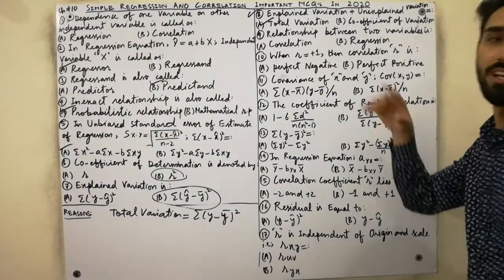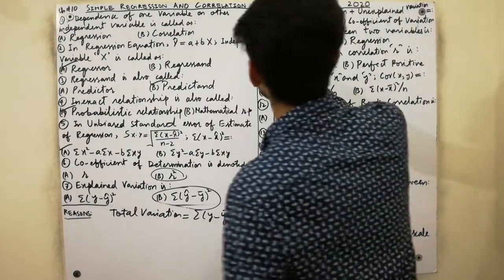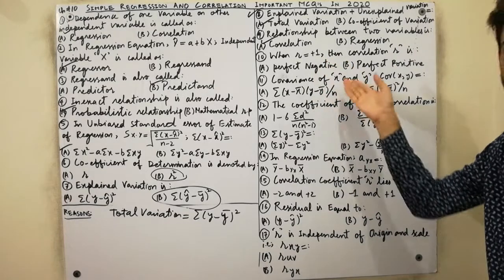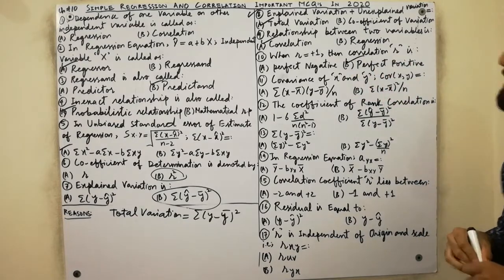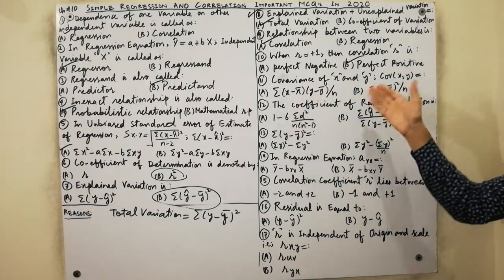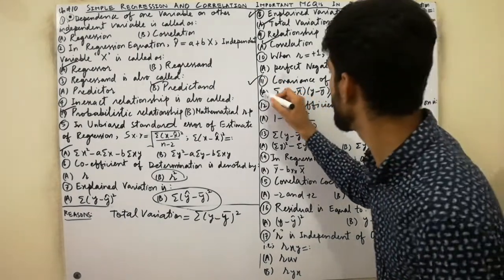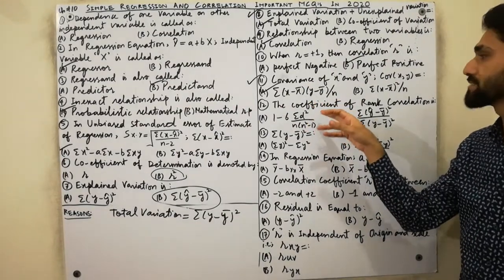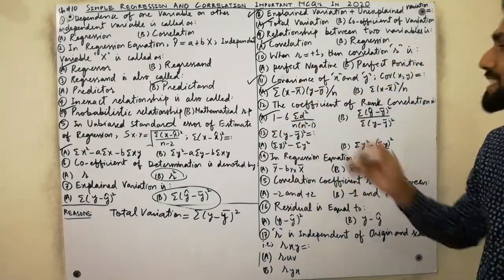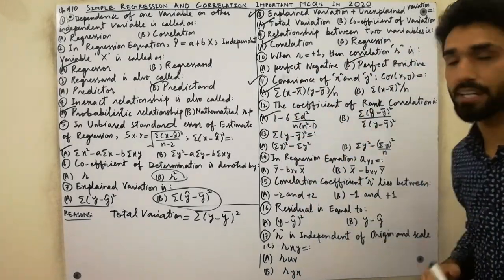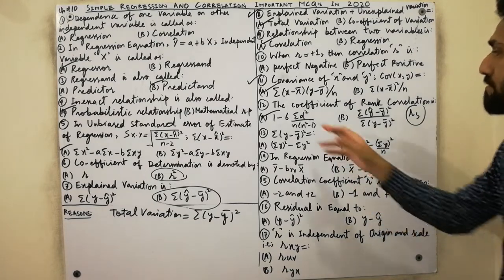The relationship between two variables written in order is called correlation. When R = +1, the correlation is perfect positive. Covariance of X and Y = Σ(X − X̄)(Y − Ȳ) / n. The coefficient of rank correlation (Spearman's rs) formula is: rs = 1 − 6ΣD² / [n(n² − 1)].